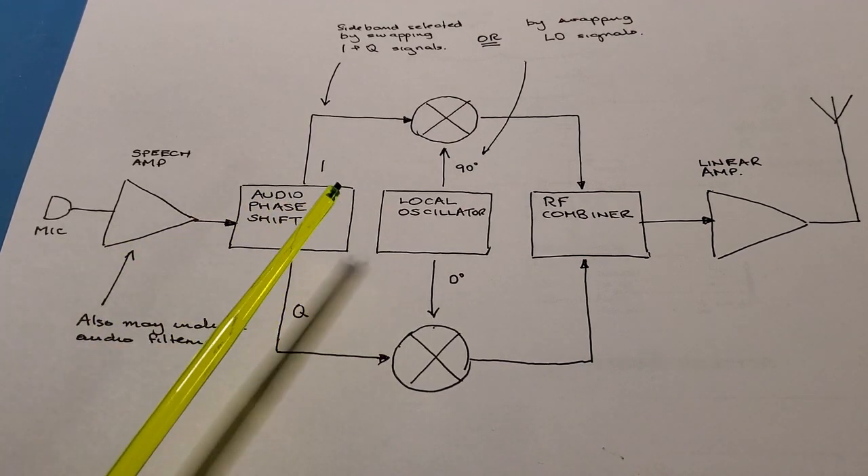Then we pass to the RF combiner, where the mixed RF signals in quadrature get combined to produce either the upper or lower sideband. The sideband is selected either by swapping these LO signals or by swapping the signals coming out of the audio phase shift network. Either will affect whether we output the upper or lower sideband. Finally, the RF is sent through the linear amplifier, amplified, and sent out through the antenna.